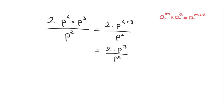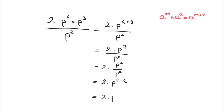Now we can simplify further. It's important to realize this is the same as 2 times p to the power of 7 over p to the power of 2 — anything multiplying the numerator can be taken out to multiply the entire fraction. Applying the division rule, this equals 2 times p to the power of 7 minus 2, which gives a final answer of 2 times p to the power of 5.